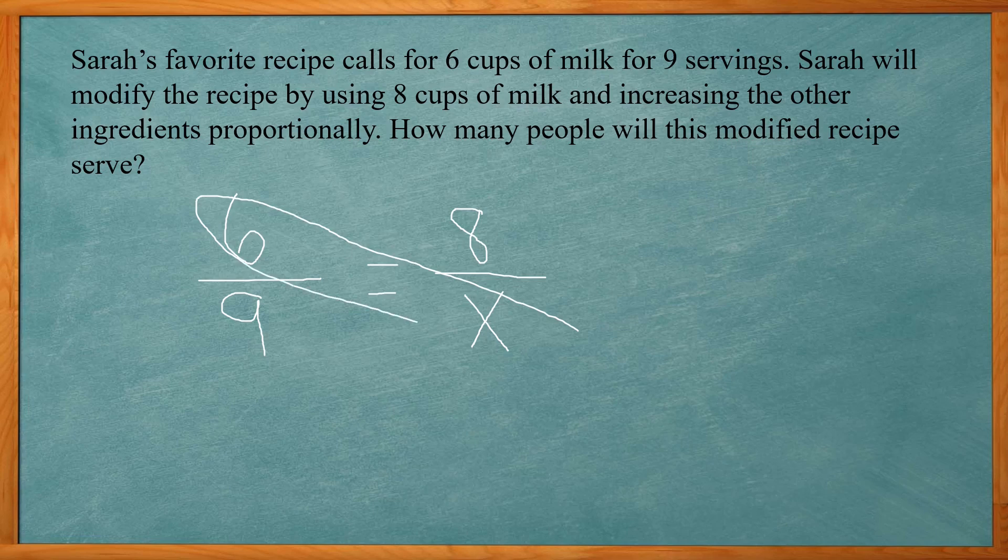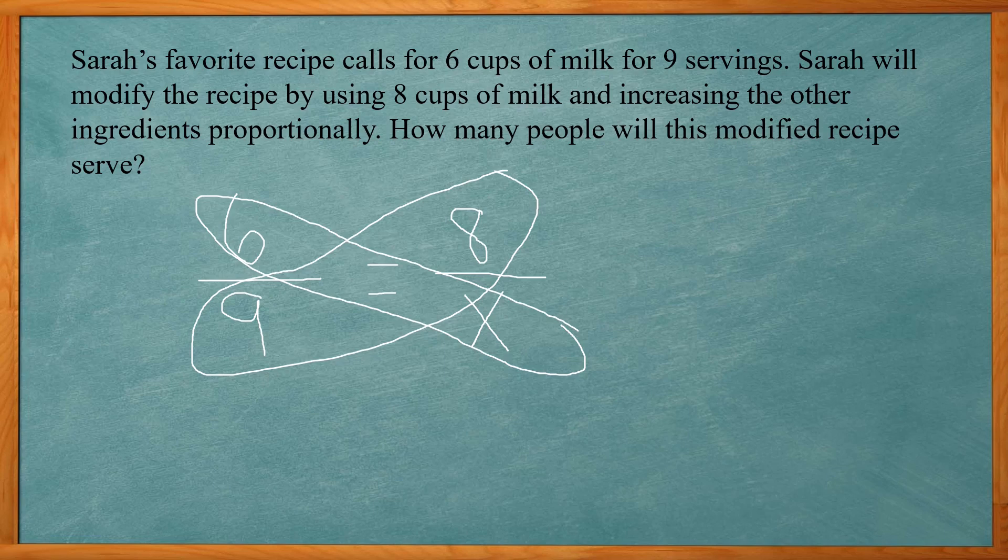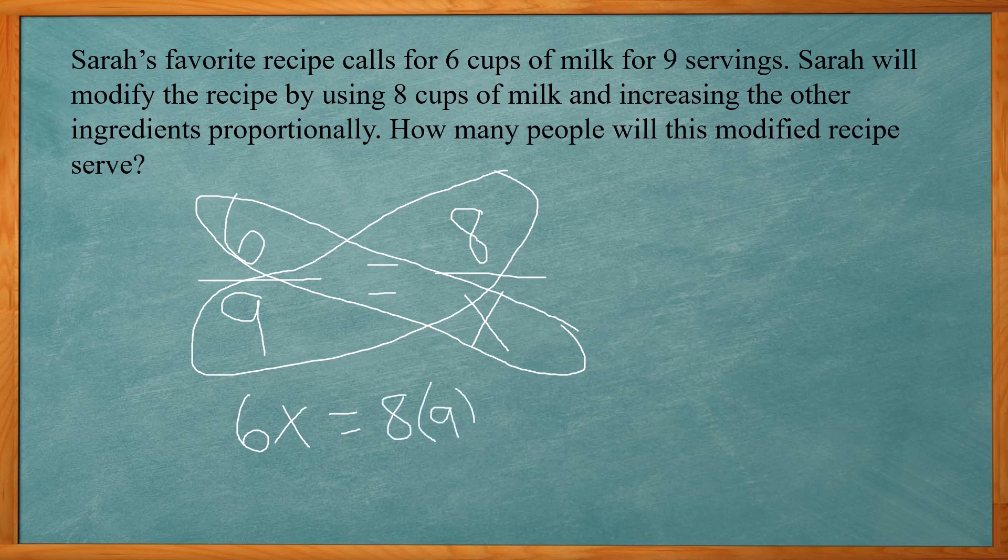Now in order to solve the proportion we need to do a cross multiplication where we multiply the diagonals together and set them equal to each other. So 6 times x or 6x equals 8 times 9, and 8 times 9 is 72.